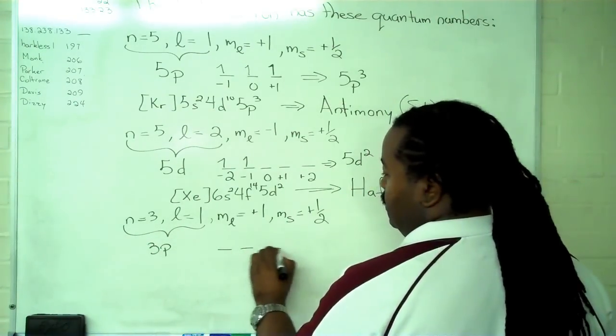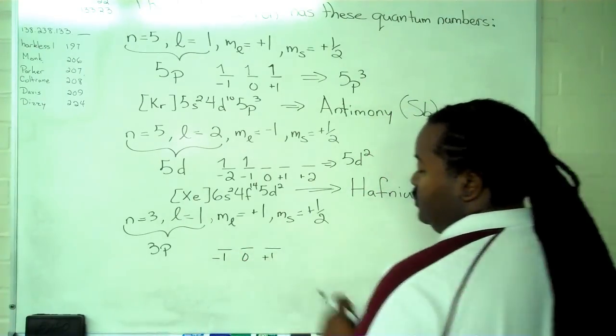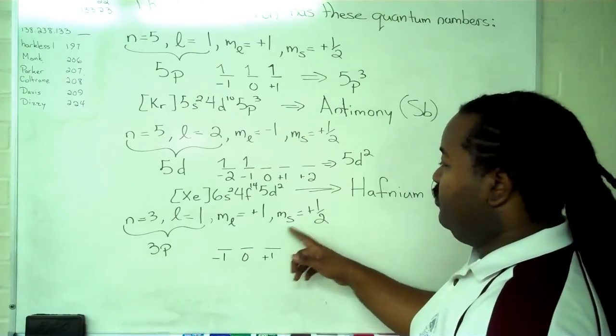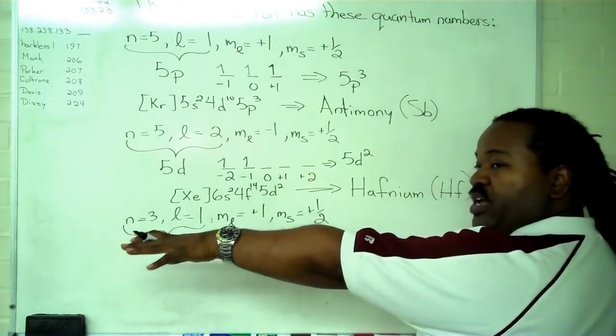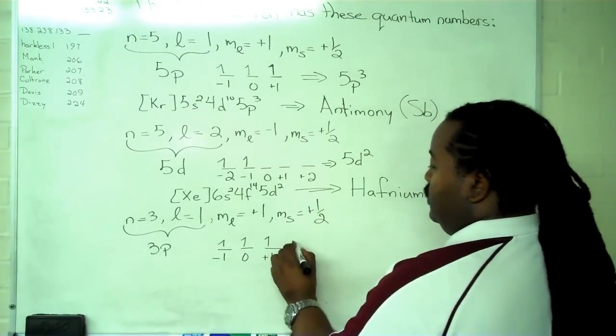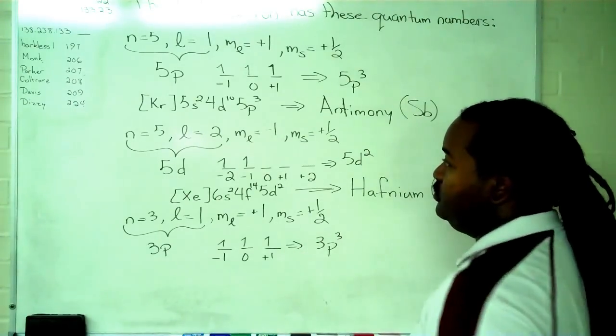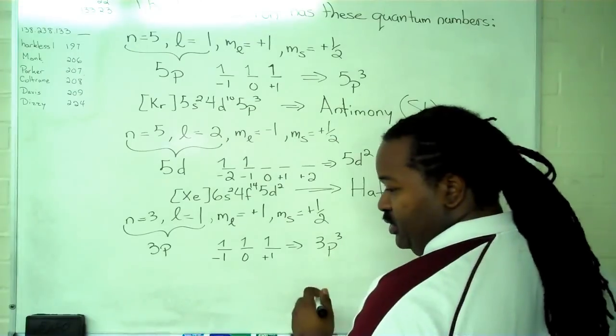We write out our three suborbitals, labeling them minus 1, 0, and plus 1. We see that we're going to have a spin-up sitting here. The only way that happens is everything preceding it is also a spin-up, and this means that we have 3p3.